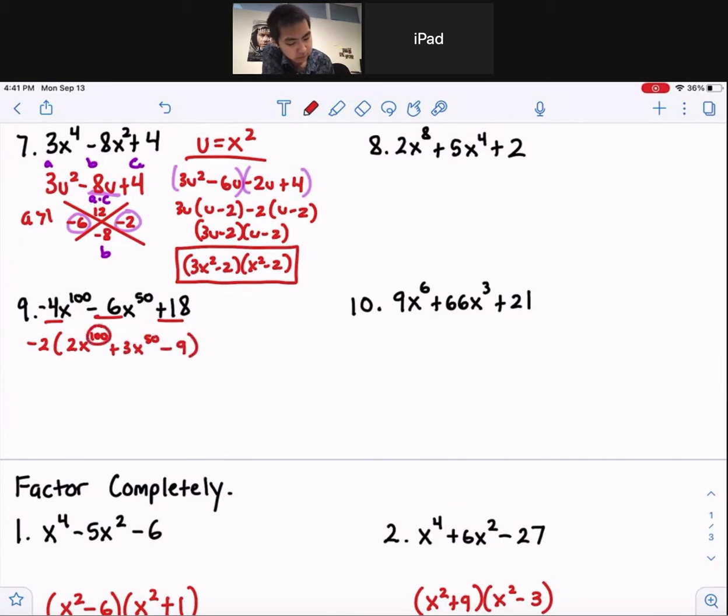So this is a trinomial. A hundred is double of 50, so let's do u-substitution, right? To the middle x variable. So now we have negative 2, 2u squared plus 3u minus 9.